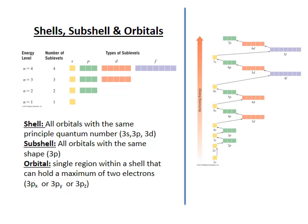In terms of the energy layout, orbitals with the same principal quantum number form a shell. In the first shell there is only an s-type orbital. In the second shell there are s and p. In the third shell there are s, p, and d. In the fourth shell we have s, p, d, and f. Technically in the fifth shell there would also be g orbitals. A subshell refers to orbitals of the same shape or angular momentum quantum number, while an orbital is a single region holding a maximum of two electrons.